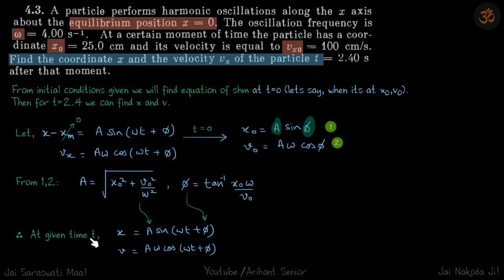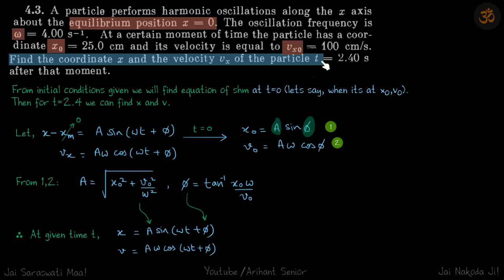Solving these two equations gives us the amplitude A and the phase phi. Now at any general time t we can write the equation of motion: x equals A sin(omega t plus phi), substituting the found values of A and phi. This gives us the values of x and v for any general time t.